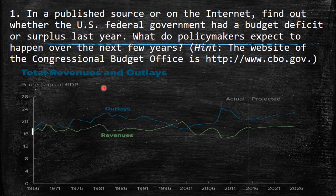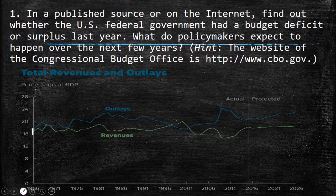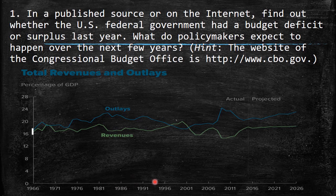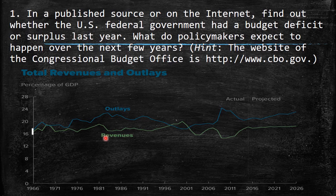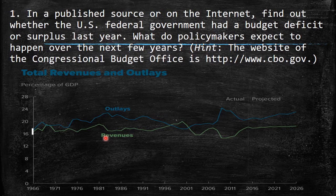This graph represents on the y-axis the percentage of GDP — as a percentage of gross domestic product. On the x-axis we have the time, year by year. We have real data until 2011. During most of the time in the 20th century, outlays were higher than revenues — what we call in economics a budget deficit. The government spent more money than the revenue.